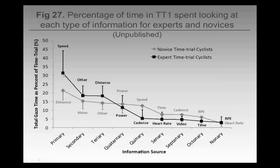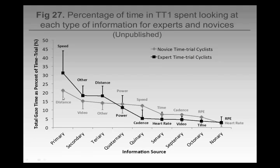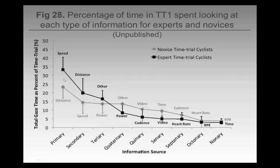The black line is the expert time trial cyclist's first time trial, and the grey line is the novices. For over 30% of the time, the experts are looking at speed information, followed by other (when they're looking at the floor or something else), and then distance. Novices, on the other hand, are looking at distance a lot — speed is way down; they're not even looking at speed much. They're very focused on the end. Experts are very focused on their speed — perhaps a reflection of experts being more performance-orientated and novices being more end-point-orientated.